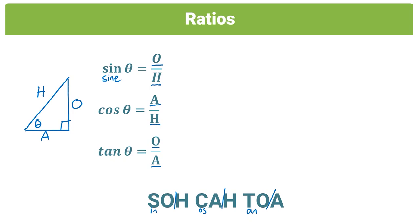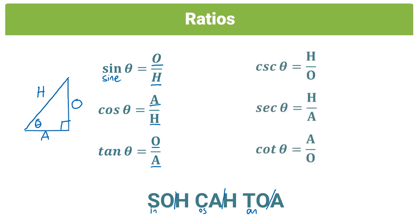In trigonometry we don't only have three ratios — we have six, because each ratio has a reciprocal sibling. Sine's sibling is cosec: where sine is O/H, cosec is H/O. Cosine's sibling is secant (sec): cos is A/H, sec is H/A. Tangent's sibling is cotangent (cot): tan is O/A, cot is A/O.